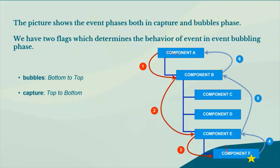Majorly, we use the bubble phase. When we want data from a child component to be utilized or updated in a parent component, we use the bubble phase for event propagation. That is all for this video — thank you.